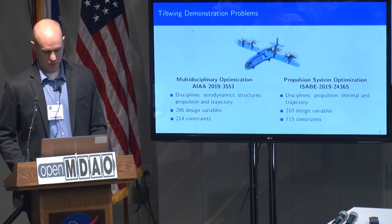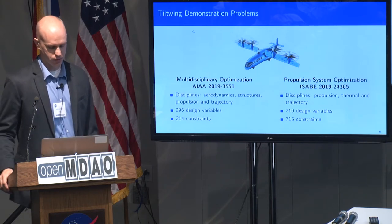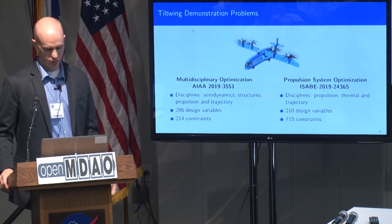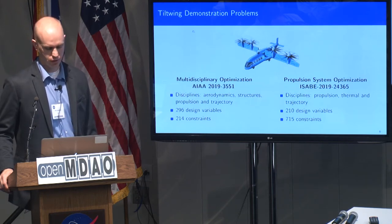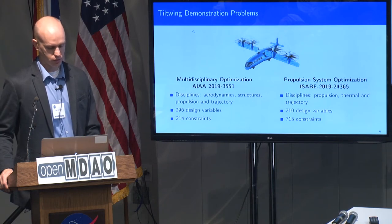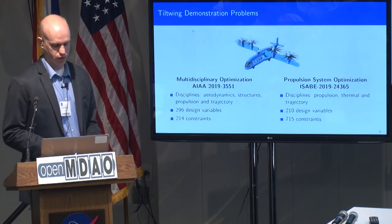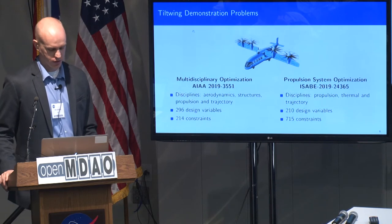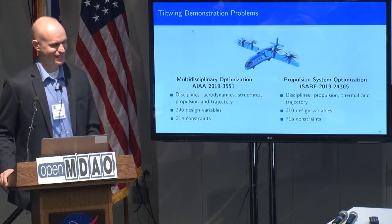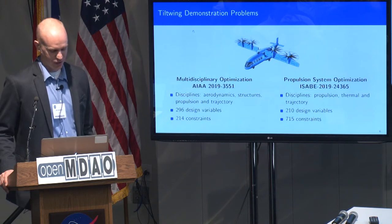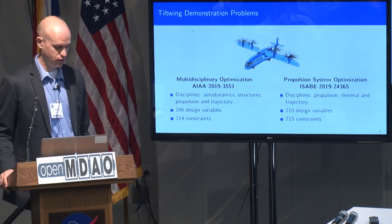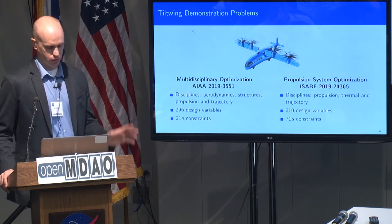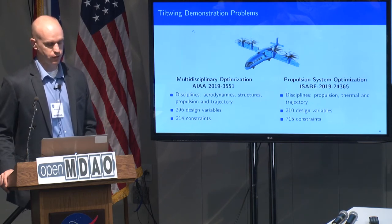I'm not going to show a lot of results here, but point you to some of the outputs from this work. We have two major papers published this year. The first one was at the AIAA Aviation Conference in June, on multidisciplinary optimization of the entire vehicle. In this work we had aerodynamics, structures, propulsion, and trajectory. We had what we thought was a fairly large design problem — about 300 design variables and 214 constraints. That work showed us some good coupling between a lot of the different disciplines.